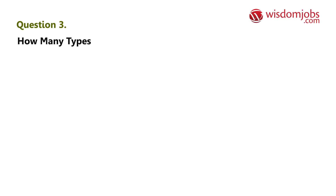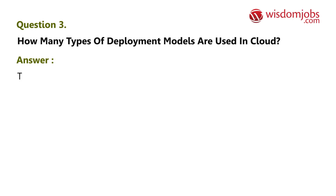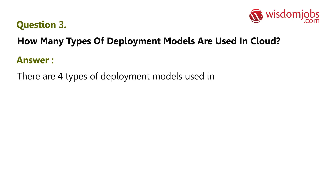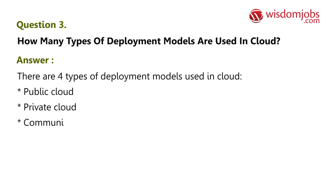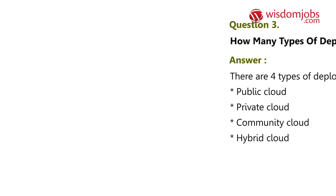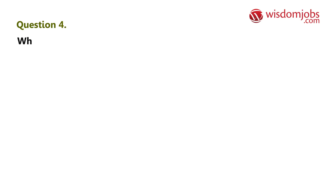Question 3: How many types of deployment models are used in cloud computing? Answer: There are four types of deployment models — Public Cloud, Private Cloud, Community Cloud, and Hybrid Cloud.